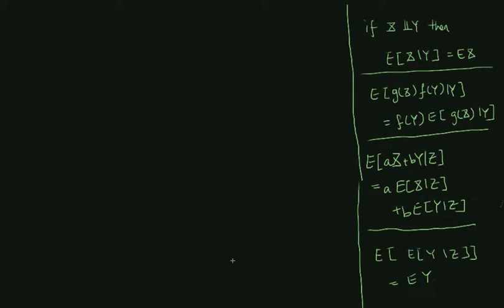This video is one of those off-the-record proofs where we will show two results. One result is that the mean of the total claim amount given N(t) is equal to N(t) multiplied by the mean of X₁. The other result is that the variance of the total claim amount given N(t) equals N(t) multiplied by the variance of X₁.